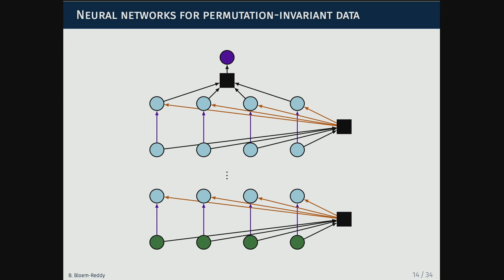These two results can be combined by composing equivariant layer after equivariant layer and using an invariant layer at the end — the whole thing is invariant. This is what the Deep Sets paper did, leading to follow-up work that improved on some results and produced very nice empirical results.